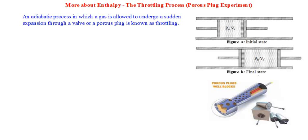Let's first define what is meant by a throttling process. It's an adiabatic process in which a gas is allowed to undergo a sudden expansion through a valve or a porous plug. A porous plug is otherwise known as a throttle. This process of adiabatic sudden expansion is what is known as the throttling process, or simply as throttling.